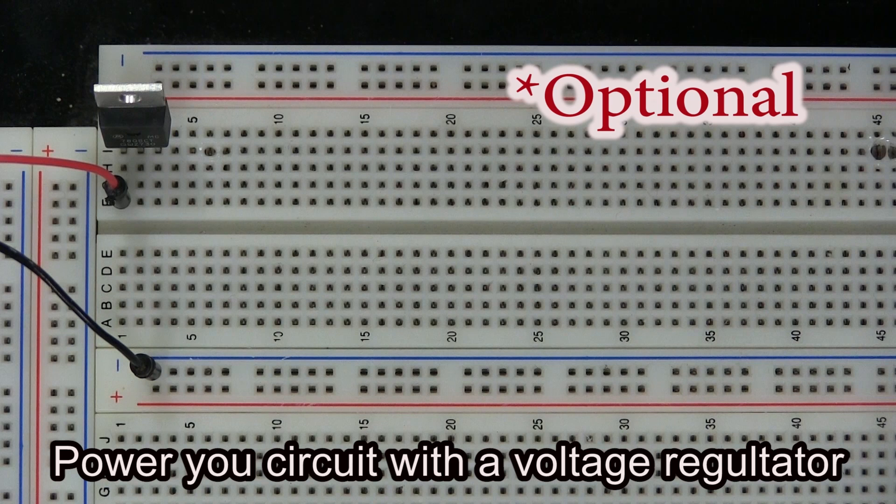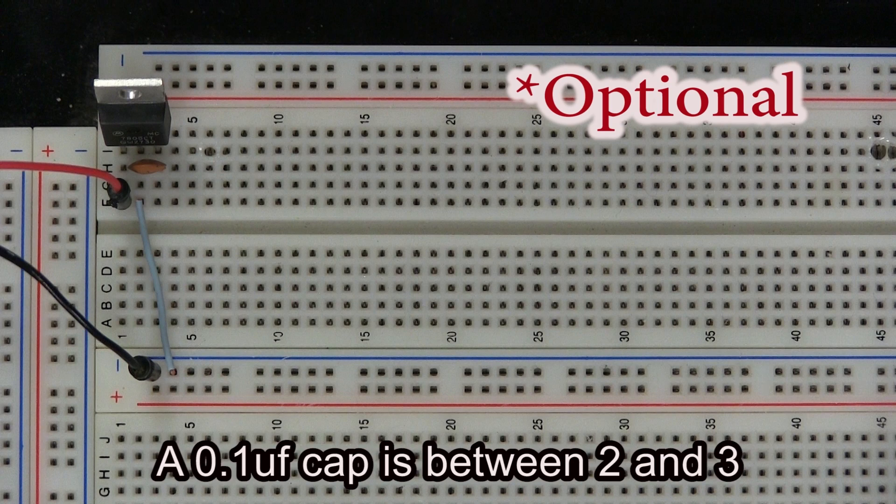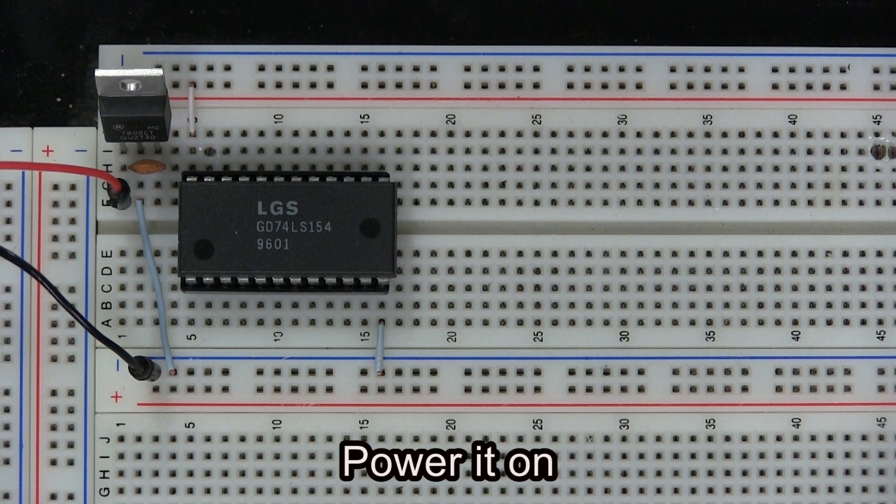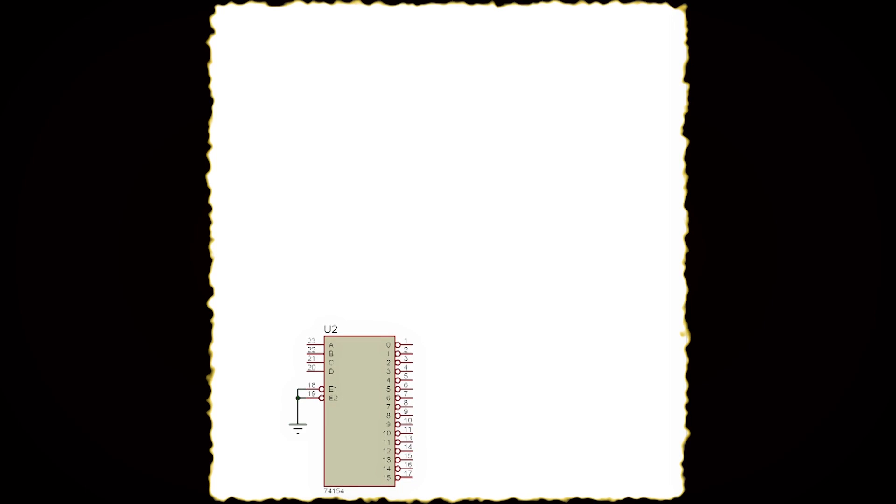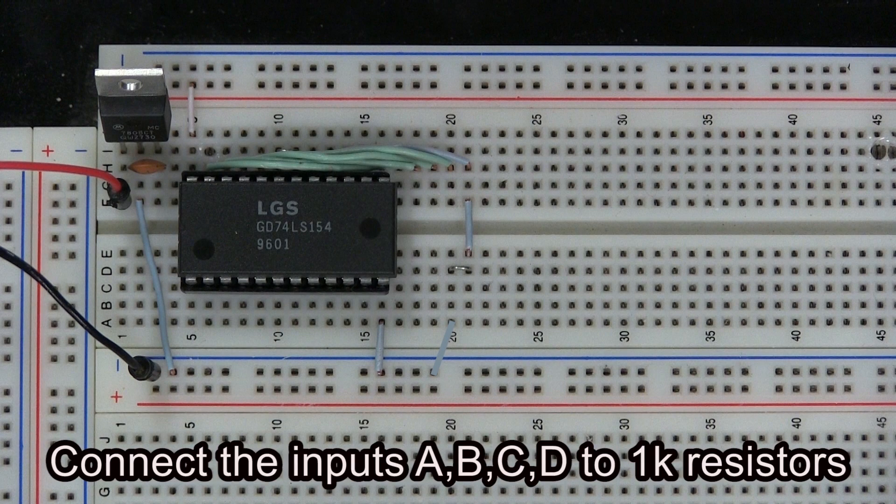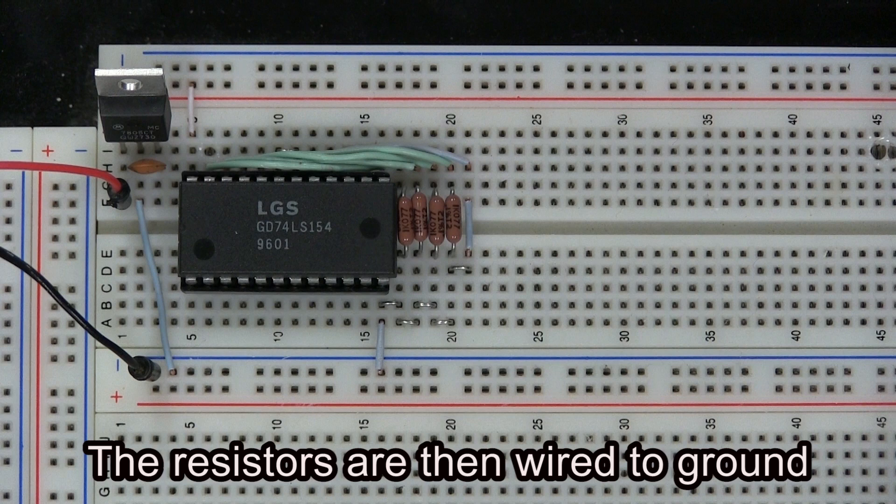Power your circuit with a voltage regulator. Pin 2 is grounded, pin 3 is your 5V. A 0.1uF cap is between 2 and 3. Place your 4 to 16 line binary decoder and power it on. Set the enabled pins to a logic 0. Connect the inputs ABCD to 1K resistors. The resistors are then wired to ground.